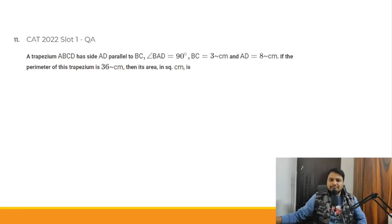This question says that a trapezium ABCD has side AD parallel to BC such that angle BAD is 90°, BC = 3 cm, and AD = 8 cm. If the perimeter of this trapezium is 36 cm, then the area in square cm is...